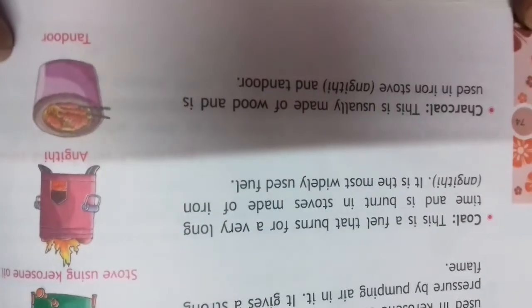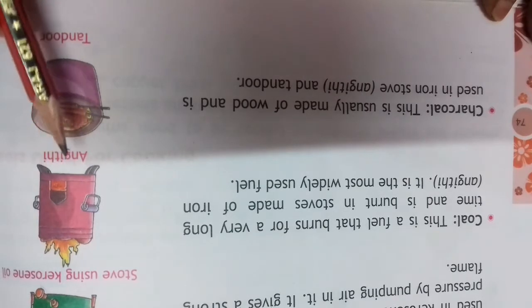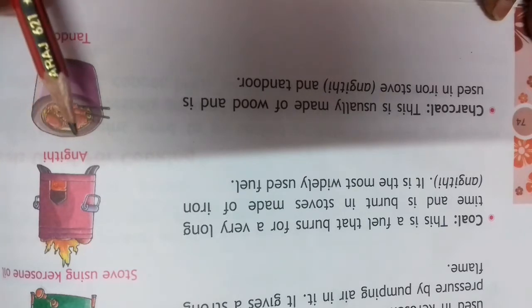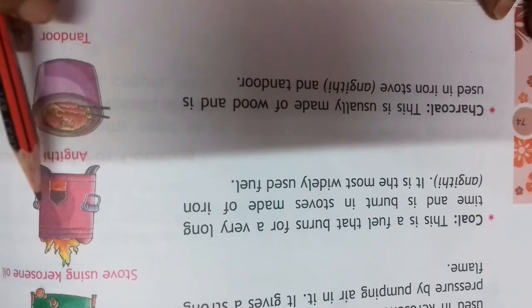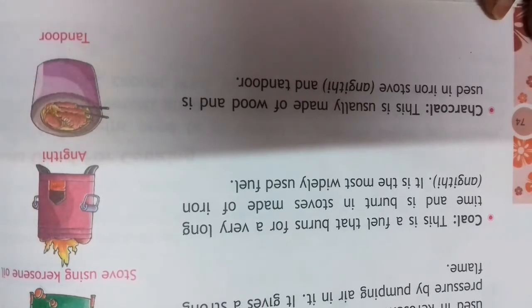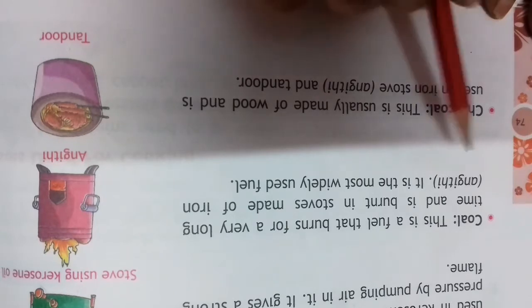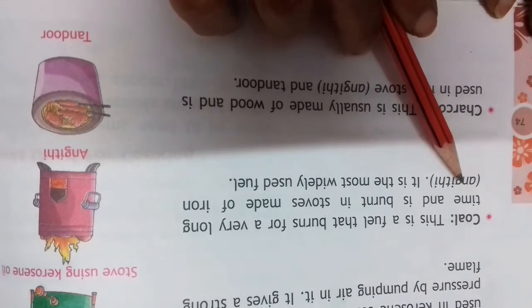Coal - this is angithi on which we burn wood. The residue left after burning wood, we call it coal and we can burn it again. In angithi, we also call it sigri. We can burn coal in it again and cook food on it. You can see this type of sigri in villages as well. Coal, this is a fuel that burns for a very long time and is burnt in stoves made of iron.